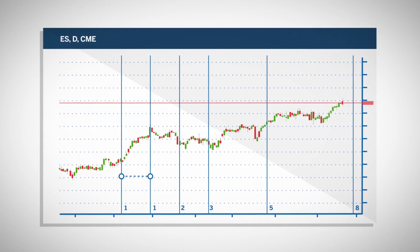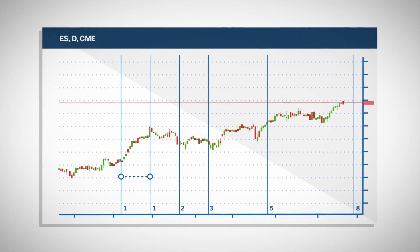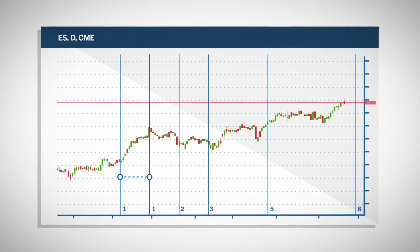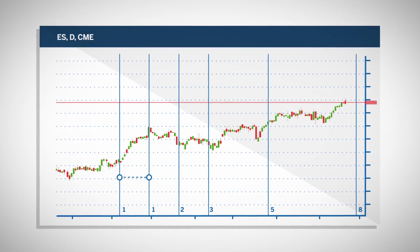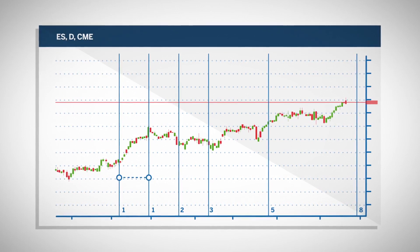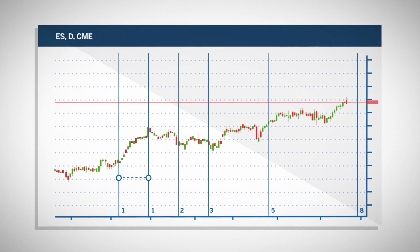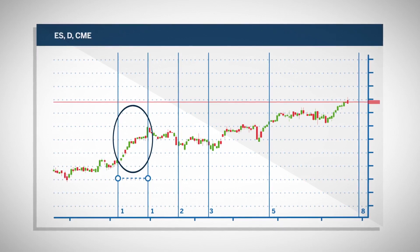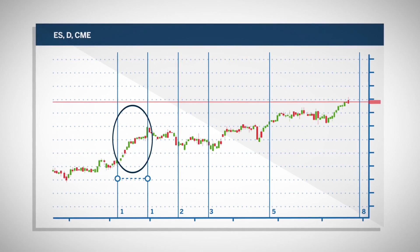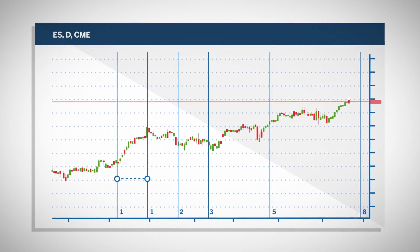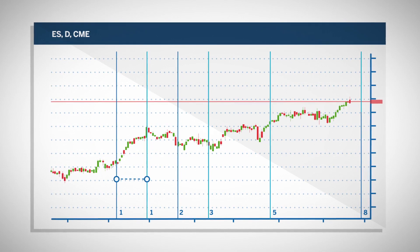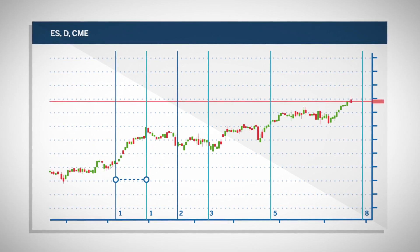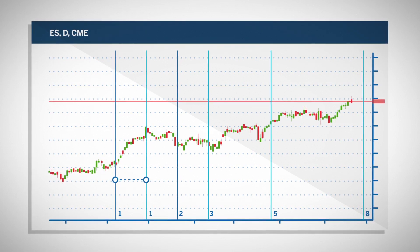Instead of providing zones of retracement based on the size of previous moves, time-based analysis provides zones of retracement based on length of time following the initial move the trader is analyzing. This is a chart that shows the time-based retracement of the S&P 500. The move, as indicated in the oval in the first two lines on this chart, represents the initial move. The subsequent vertical blue lines are the 1, 3, 5, 8. According to Fibonacci analysts, they expect changes in trend at each of these lines.